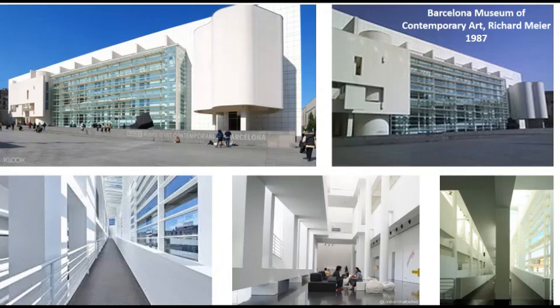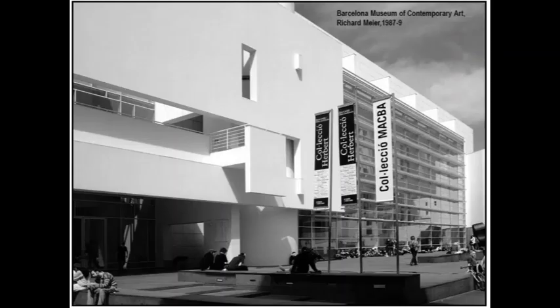Next is the Barcelona Museum of Contemporary Art by Richard Meier, designed in 1987. Here again you can see the use of white, carrying the color from the exterior to the interior. In the center there is a glass curtain wall with a rectilinear form on the left side and a very curvilinear kind of form on the right side. On the rectilinear surface on the left side of the building you can see punctures or voids created through rectilinear lines, with additions or subtractions from the regular geometry.